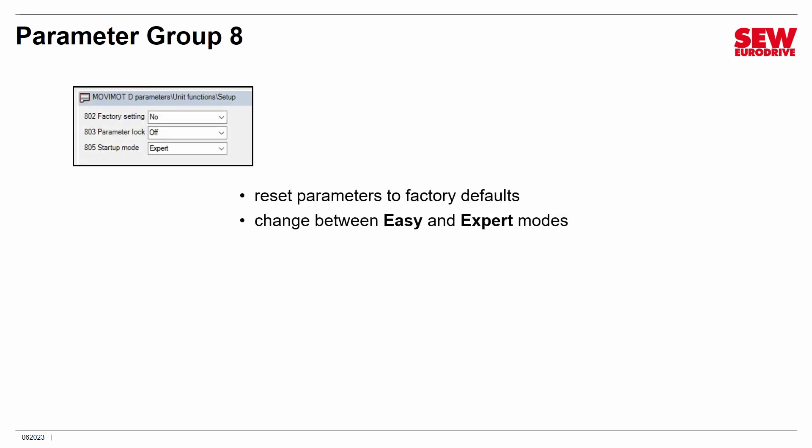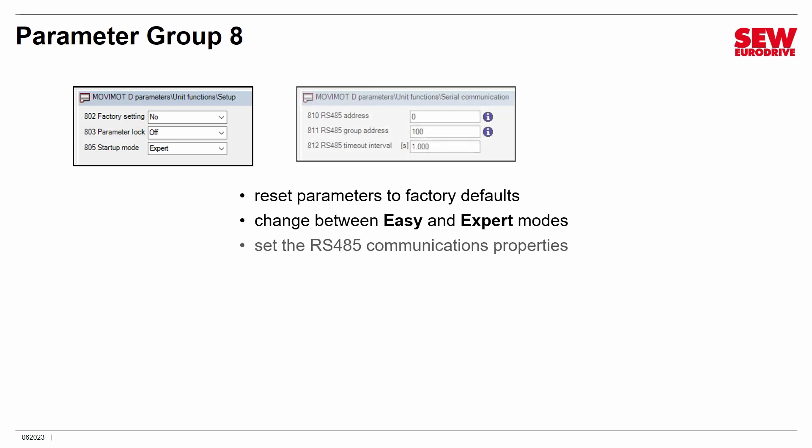Parameter Group 8 is where you switch between Easy and Expert Mode, and also where you can factory reset all parameters back to factory defaults — a smart idea when first going into Expert Mode so you start with a clean slate. If you're using the RS-485 or Fieldbus interface, you can access parameters to set up RS-485 communications. If you're not using that, leave them alone. You can also set the pulse width modulation frequency to one of the standard choices.